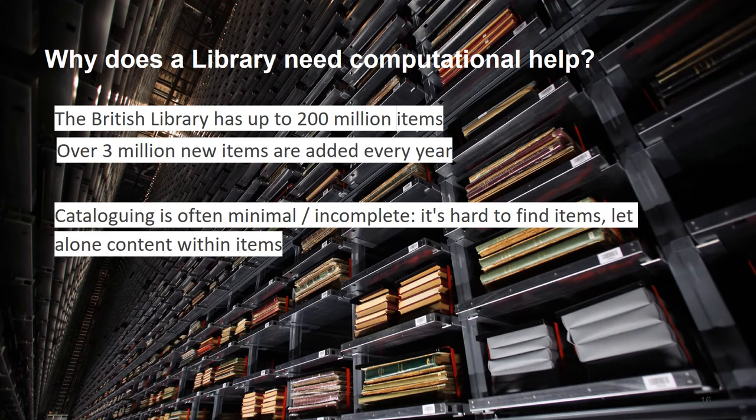Why does the British Library need computational help? As I noted earlier, we have a lot of items and approximately three million items are added every year. Cataloguing or describing these items is often minimal and incomplete, which means it's very difficult to find items sometimes, let alone things within the items.